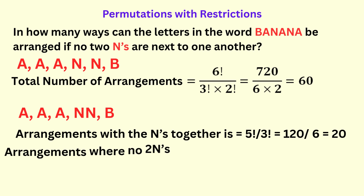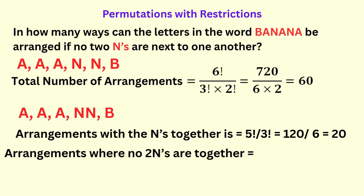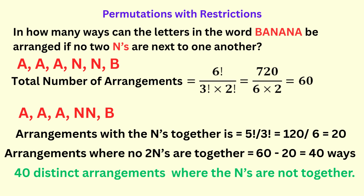So to get the total number of arrangements where no two N's are beside each other, we subtract this value from the total arrangements. That's sixty minus twenty, which gives forty. So the final answer is forty distinct arrangements where the N's are not beside each other.